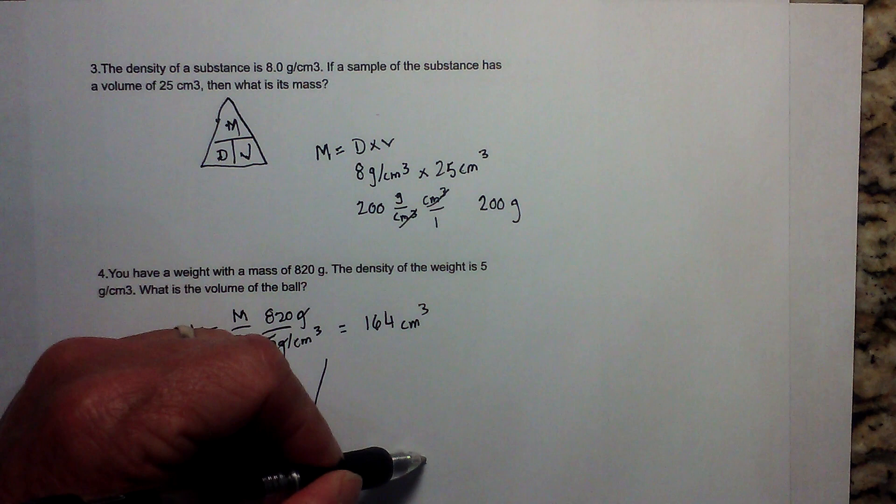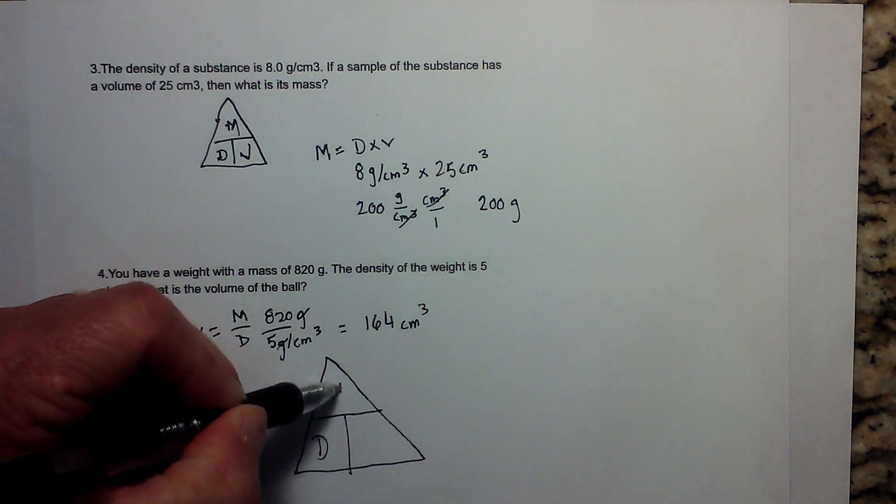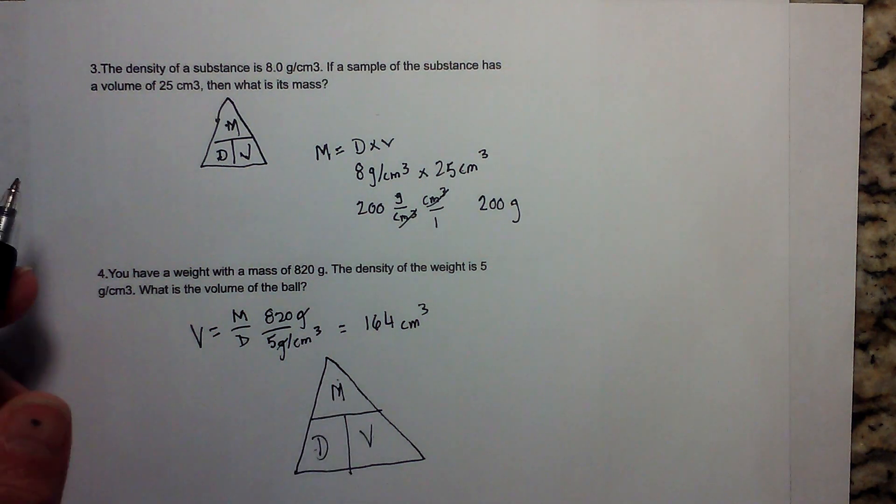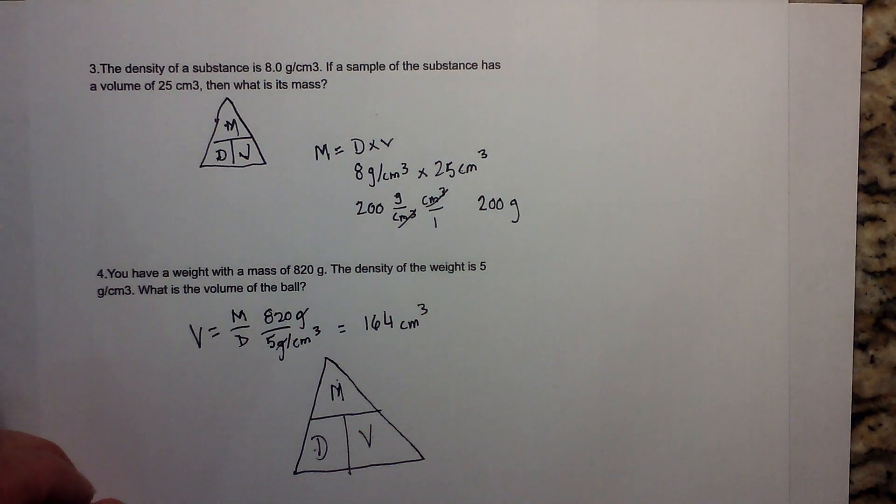So there we go. Remember you go to the DMV - the DMV - and that's density, mass, volume, and you can calculate all three of those using the triangle. Thanks for watching. Moomy Math uploads a new math and science video every day. Please subscribe and share.